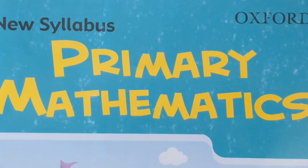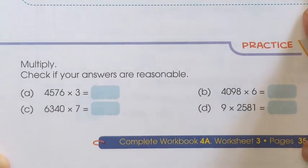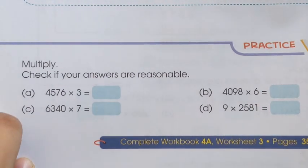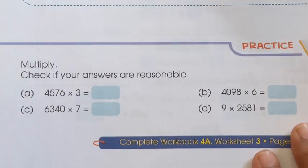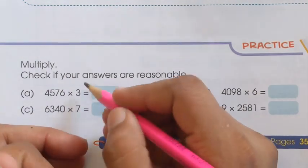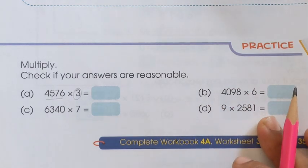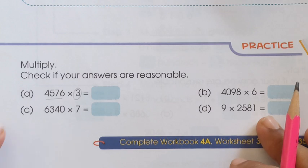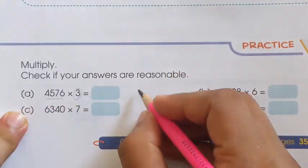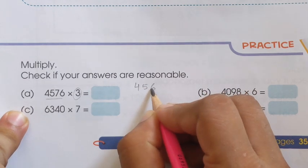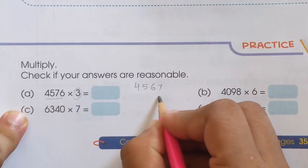Bismillahirrahmanirrahim. Assalamualaikum dear students, how are you? I hope you'll be fine. New syllabus primary mathematics textbook 4 — today we are going to do some practice questions on page number 41. This is lesson number 3 of chapter number 2: multiplication and division. Here we have to learn how to multiply a one-digit number with a four-digit number. You have to write it in vertical form, with the four-digit number on top and the one-digit number below, aligned at the unit digit.